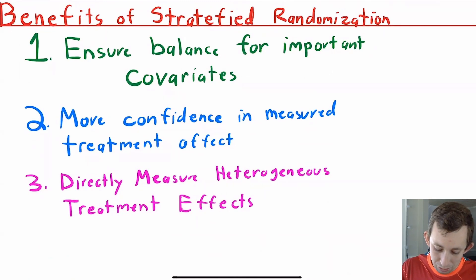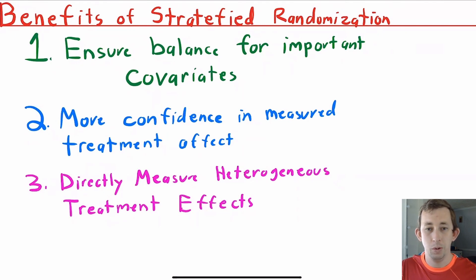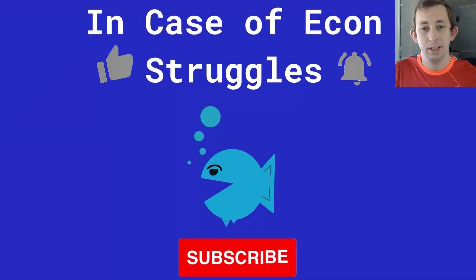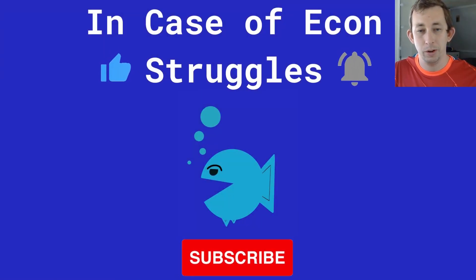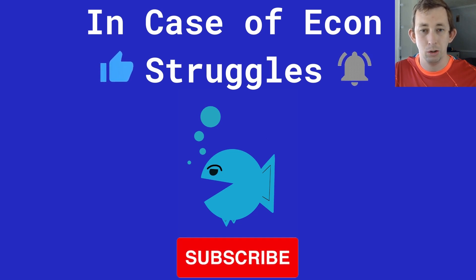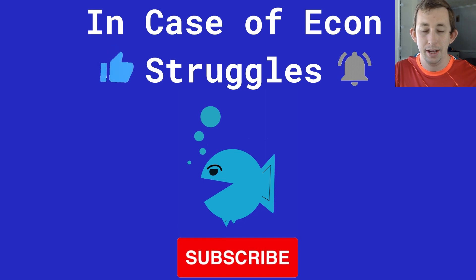To wrap up with some benefits: you can ensure balance for important covariates by doing the stratification, by picking names out of sub-hats rather than all out of one single hat, which means you'll have more confidence in the treatment effect estimate because you've done as much as you can to prevent selection bias. It's also useful because you can measure heterogeneous treatment effects — you can do a sub-analysis where you only look at the old unhealthy people and see how the new hospital worked compared to the old hospital, and you already have those subgroups defined. Hopefully this gives you a better idea of stratified randomization so that when you're reading papers or thinking about how you design a randomized control trial of your own, this is something you can keep in mind.